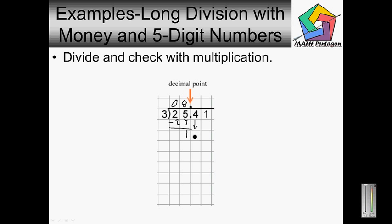Bring down the four. Three goes into fourteen — how many times? The closest would be four. Three times four is twelve. Fourteen minus twelve is going to give me two. Bring down the one. Three goes into twenty-one seven times. So I have eight dollars and forty-seven cents.